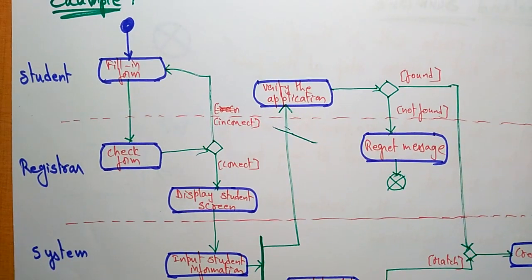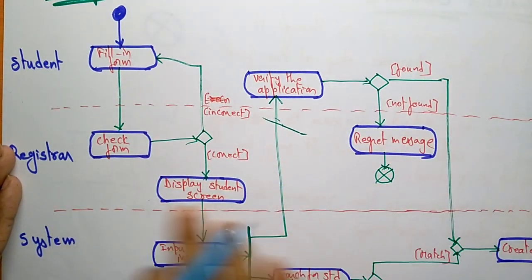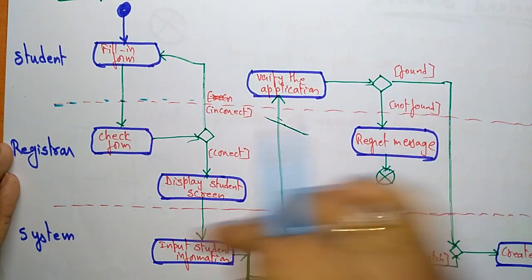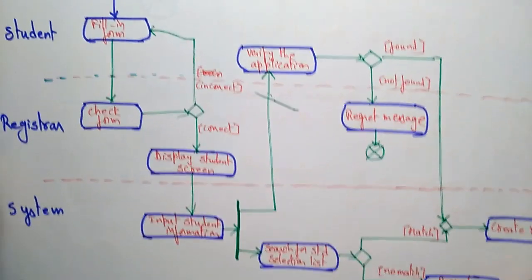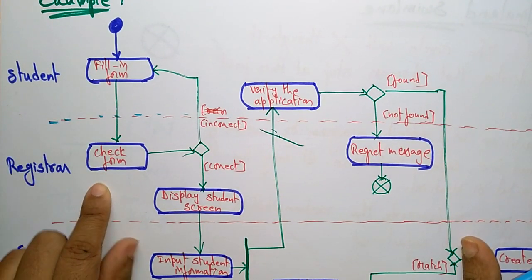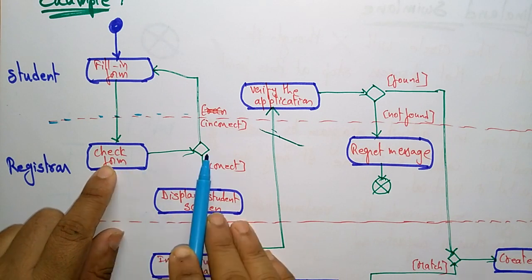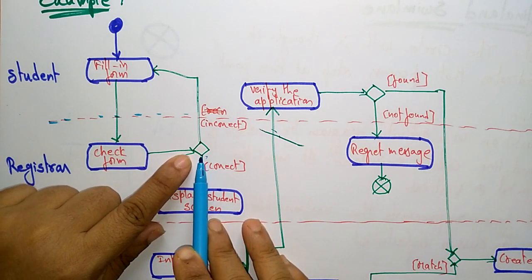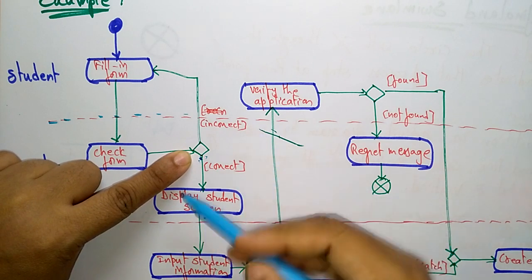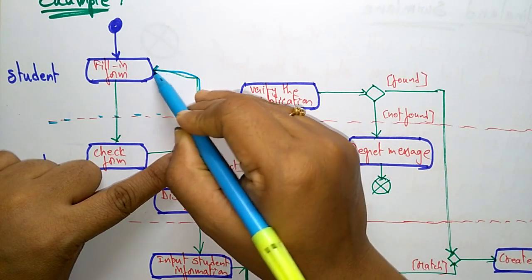Let me explain swim lane with a simple example. Here there are three roles in the activity diagram: student, registrar, and system. Since there are three actors, I divided the system using swim lanes with a dotted dashed line horizontally. This part is related to student, this part is for registrar, and this part is for the system. First, the student fills in the form, and whenever he fills the form the registrar checks it with a decision — if the student details are correct, it displays the student screen; otherwise, it shows an incorrect student message.